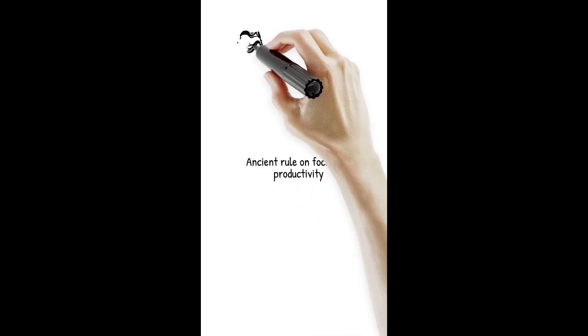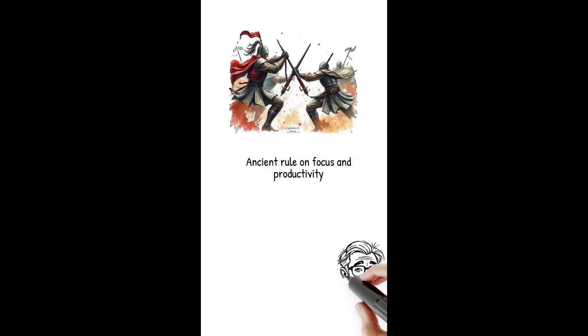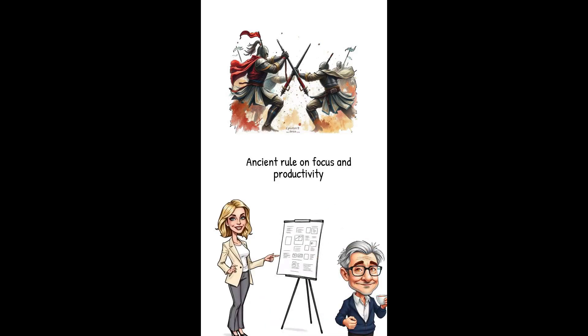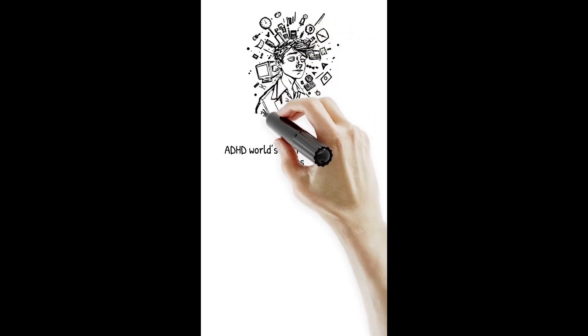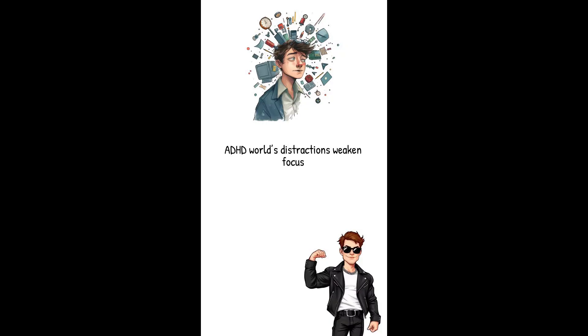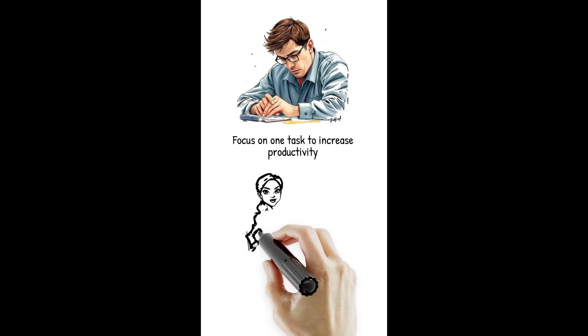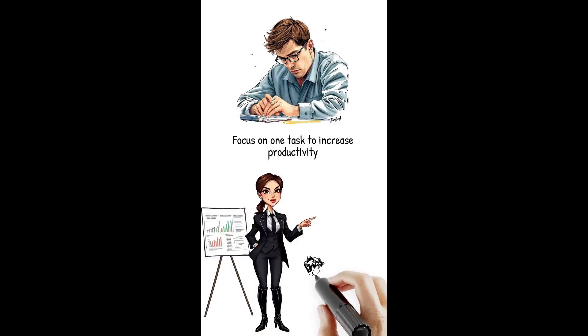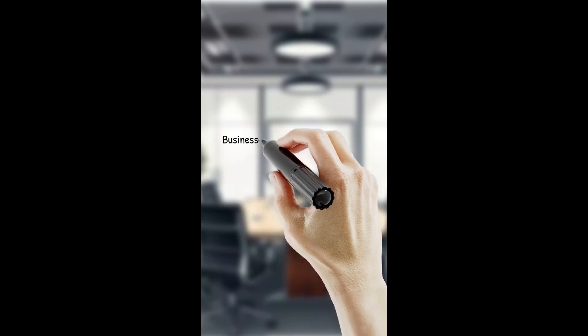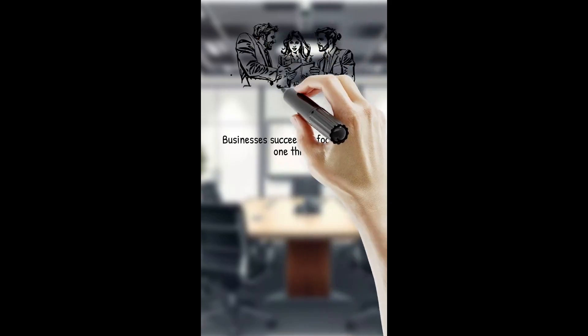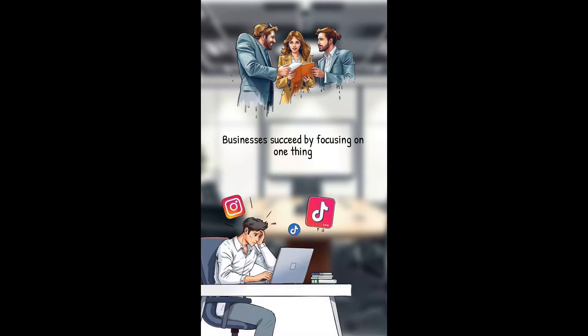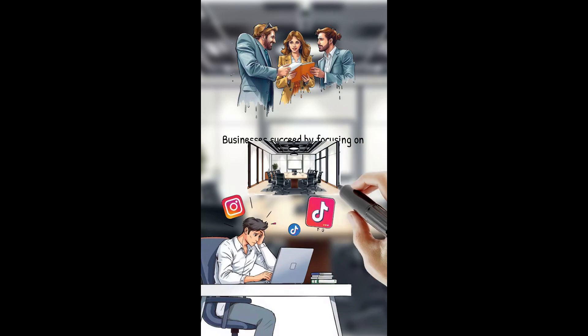Here's a 2,500-year-old rule that will completely change your mind on focus and productivity: 'Should the enemy strengthen his left, he will weaken his right. Should he strengthen his right, he will weaken his left. If he sends reinforcements everywhere, he will be weak everywhere.' — Sun Tzu. In an ADHD world filled with distractions, it's easy to be spread too thin. If you focus everywhere, you'll be weak everywhere and get nothing done. Channel your focus on one thing at a time, complete it, then move on. The best businesses focus all their resources on being the best at one thing — that's how you become successful. Focus on one thing at a time.